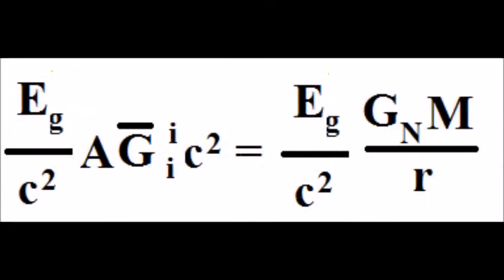Gravitons don't have mass, so we divide the energy Eg by C squared. Then we use that figure as a factor for both sides of the equation. We now have gravitational energy.